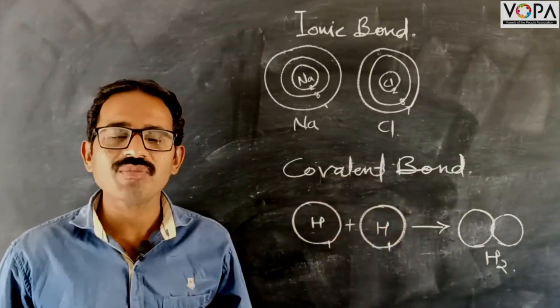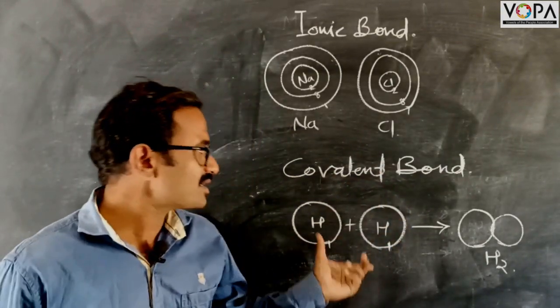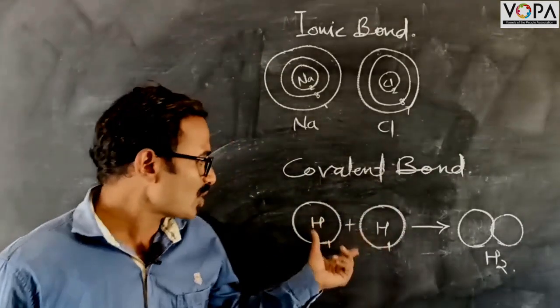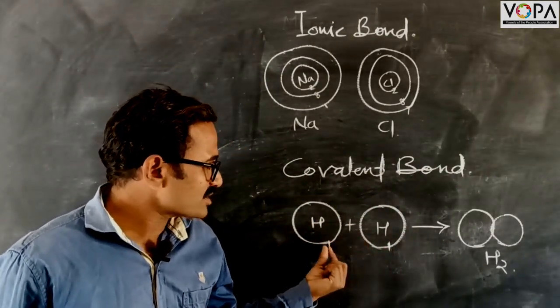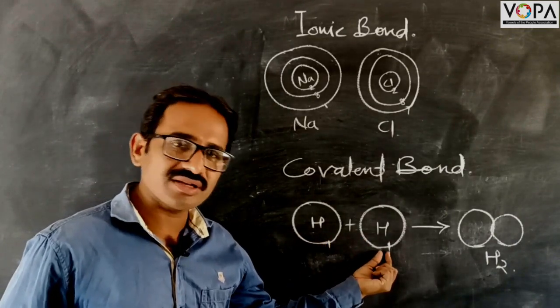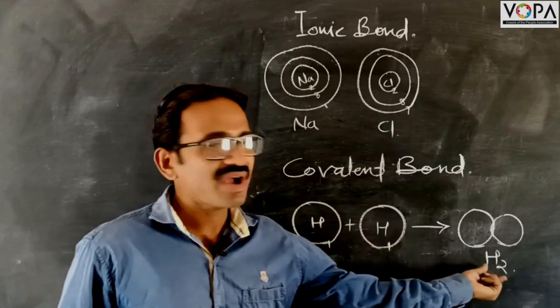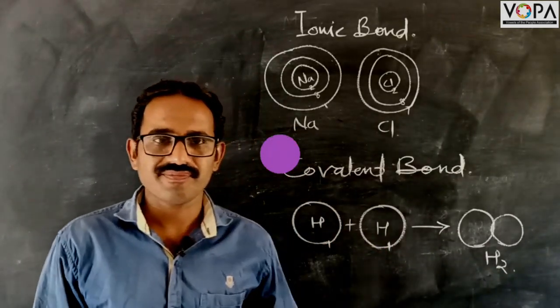In a covalent bond, there is a sharing of electrons. For example, one hydrogen atom and another hydrogen atom combine together to form a hydrogen molecule by sharing electrons.